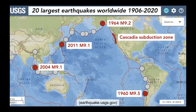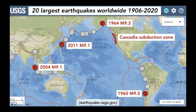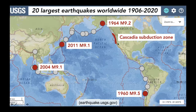This map shows the 20 largest earthquake locations for the last hundred years or so, including the top four largest ever known earthquakes. The largest was in 1960, magnitude 9.5 in Chile; second largest in 1964, magnitude 9.2 in Alaska; and then the 2004 and 2011 earthquakes, both about magnitude 9.1. You'll notice that the Cascadia subduction zone does not have an earthquake plotted, because Cascadia has not experienced a great earthquake since the year 1700.